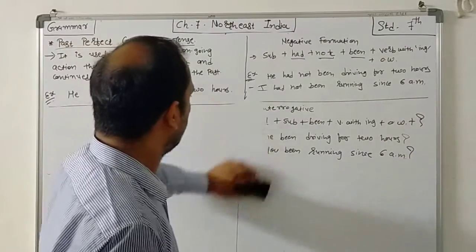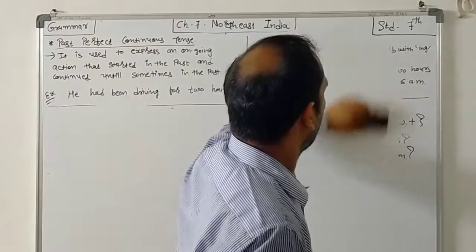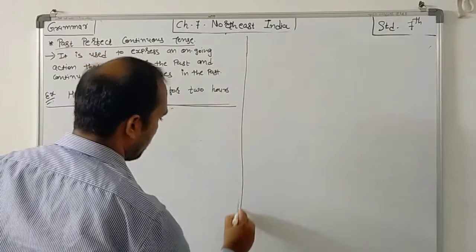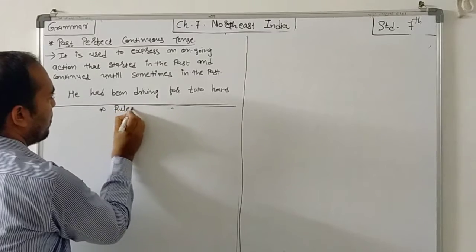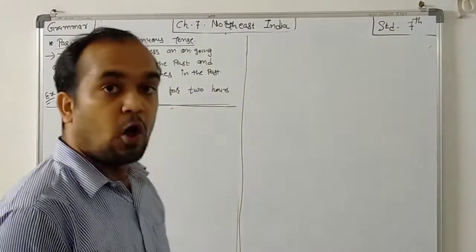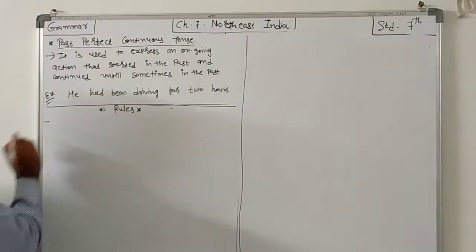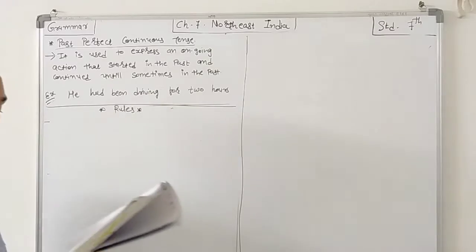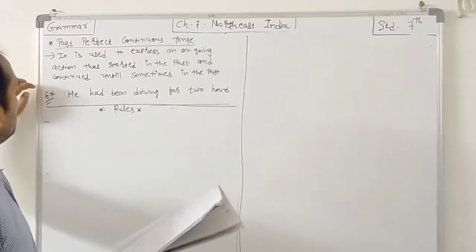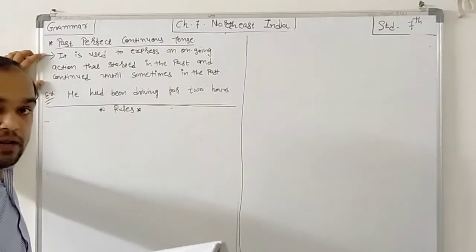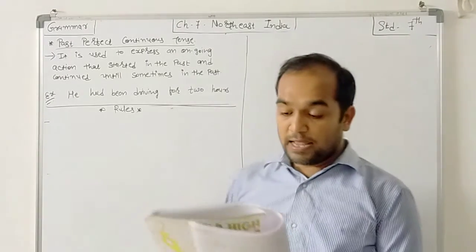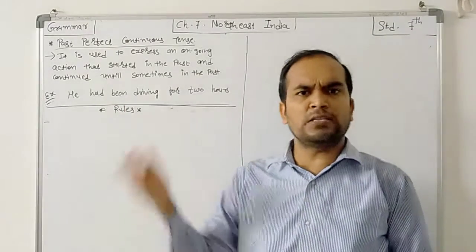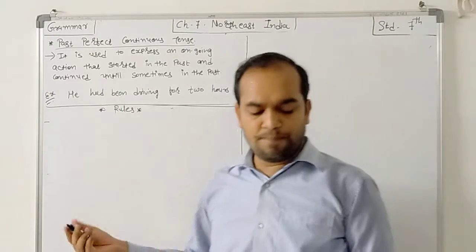So remember these three formations. Affirmative: Subject + had + been + verb with -ing + other words. Negative: Subject + had + not + been + verb with -ing + other words. Interrogative: Had + subject + been + verb with -ing + other words + question mark. Now then comes rules. The main rule says it is used for something that started in the past and continued up to a given time in the past. For example: 'He had been driving for two hours' — it started in the past and continued until that given time.